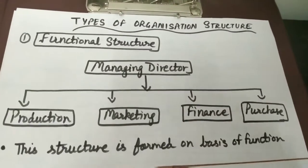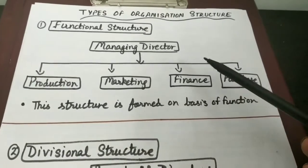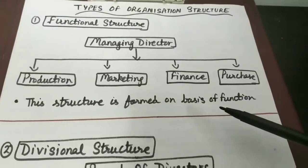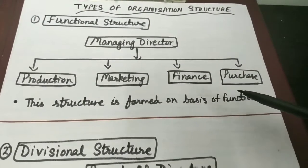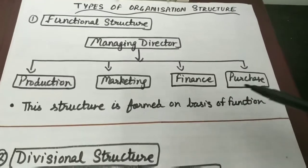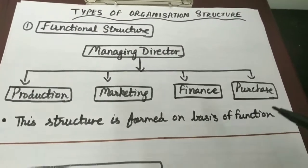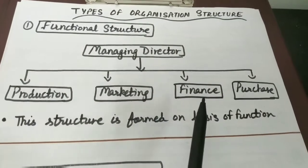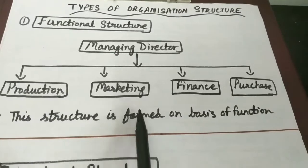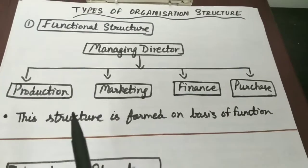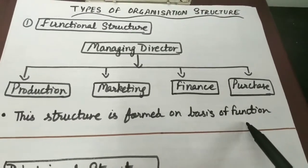So now we will be discussing different types of organizational structure. We have two types of organizational structure. First is functional structure, second one is divisional structure. Jo functional structure hai, this structure is formed on the basis of functions being performed within the organization. Yaani ki jab hum total work ko identify karne ke baad similar activities ka group banaate hain, toh that group is being made on the basis of functions we perform within the organization. Isi ko kehte hain functional structure. Ismein ek managing director hai, aur uske under we have production department, marketing department, finance department, purchase department — and these departments have been made on the basis of different functions being performed within the organization.